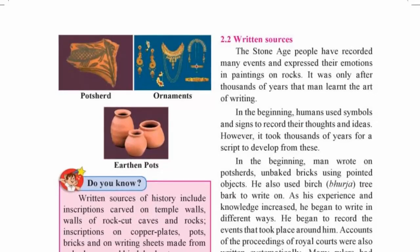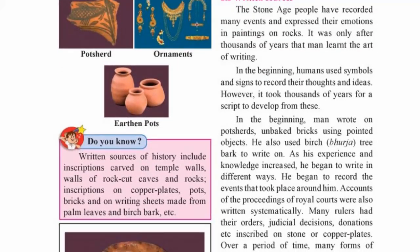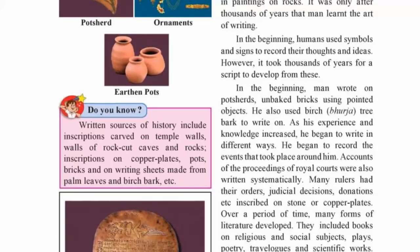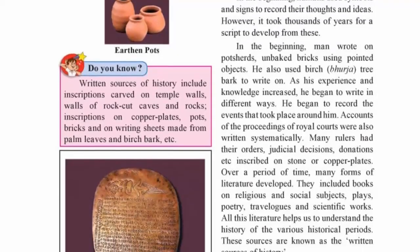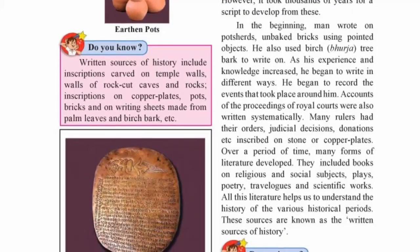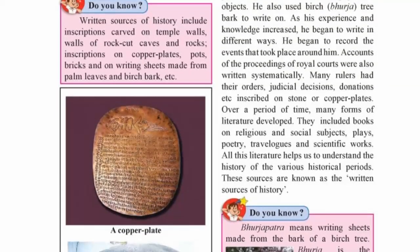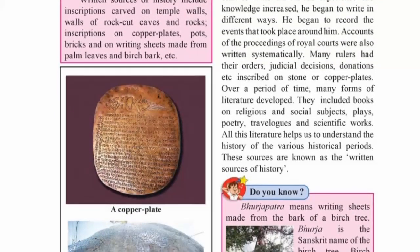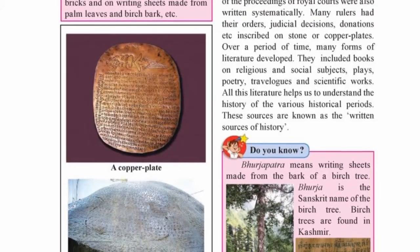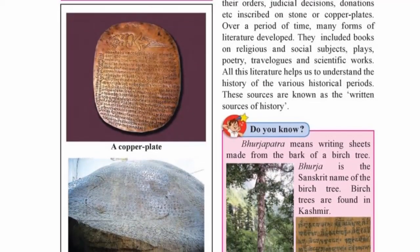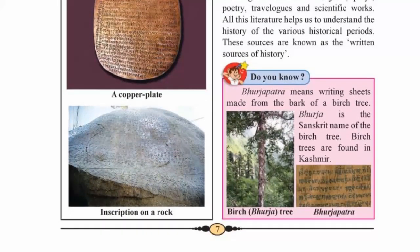As man's knowledge and experience increased, he began to use various forms of writing. The proceedings in the royal court were recorded in writing. The edicts, decrees and deeds of kings were inscribed on stone or copper plates. Different forms of literature, such as poems, plays, travelogues and scientific writings, developed. All these together form the written sources of history.